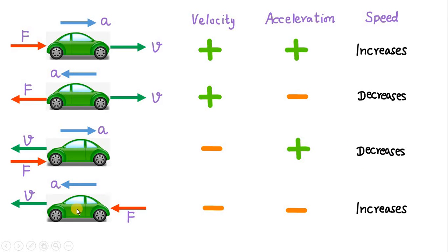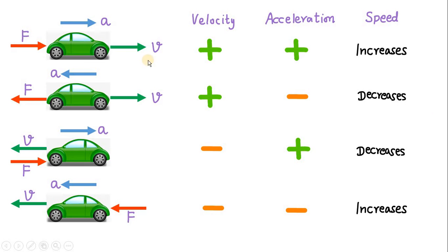And in the last case, we see that the force is acting in the direction of motion — it is supporting the motion — so the speed must increase. Observe carefully: the positive acceleration here is causing a decrease in speed, meaning retardation is happening. And negative acceleration is causing an increase in speed, which is contrary to the first two cases. Mostly, we believe that when acceleration is positive then speed increases, and when acceleration is negative then speed decreases. But these two things are true only if the velocity is in the positive direction. If the velocity is in the negative direction, then the rule gets completely reversed.